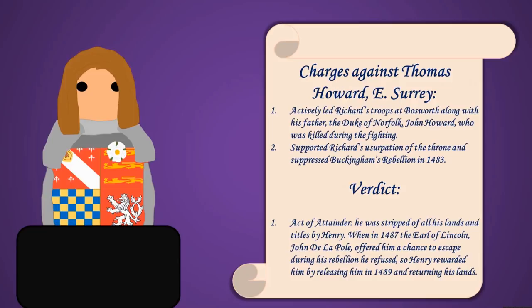Thomas Howard was given an act of attainder — an important term for the period — whereby all titles and lands were stripped and he was exiled. However in 1487, when the Earl of Lincoln revolted against Henry, Howard was given a chance to escape from imprisonment but refused, showing his loyalty. As a result, in 1489 he was released and the act of attainder was reversed, returning his lands to him.